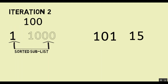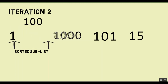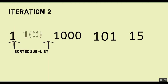So 100 is compared to 1000, 1000 moves towards the right and 100 comes down in 1000's place. These 3 numbers — 1, 100 and 1000 — are now at the end of iteration 2 in the correct position.